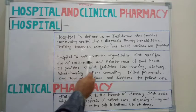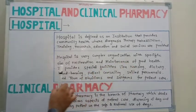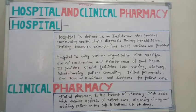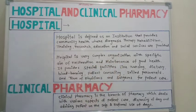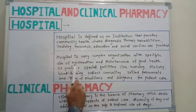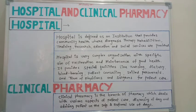The next definition: a hospital is a very complex organization with the specific aim of restoration and maintenance of good health. It is not a small organization — there are many departments such as OPD Department, Gynecology Department, Maternity Department, Surgery Department, and Medicine Department. Its specific aim is to restore normal conditions and maintain good health for patients.